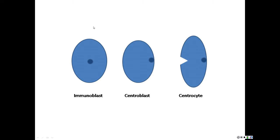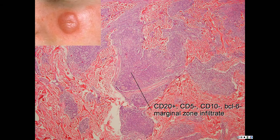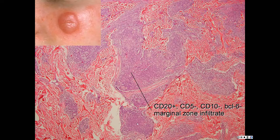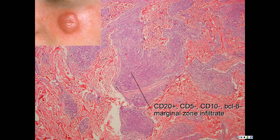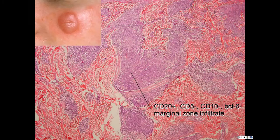For the follicle centers, remember: immunoblast in the center, centroblast at the side, centrocyte cleaved. When talking about marginal zone lymphomas, it's a small centrocyte-like cell — a small, gray, cleaved cell. The other thing typical for marginal zone lymphomas: they're vertically oriented. They tend to be gray, smudgy cells that are vertically oriented — dense and vertical. When you look at your vessels, your lumens are all preserved and there's no reaction to the vessels. Your follicles are normal.